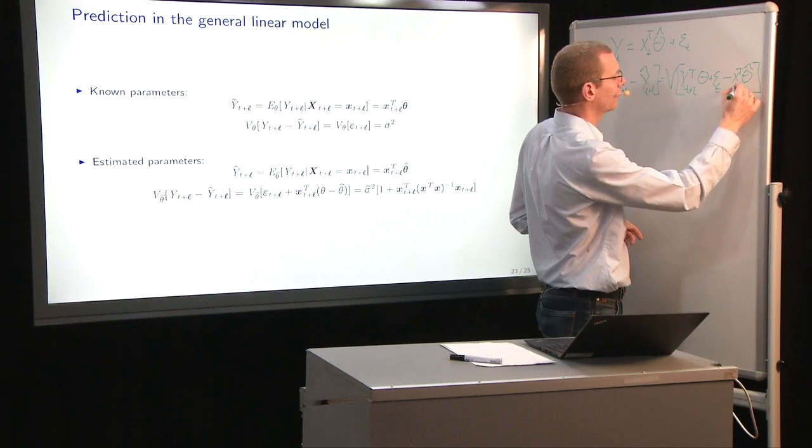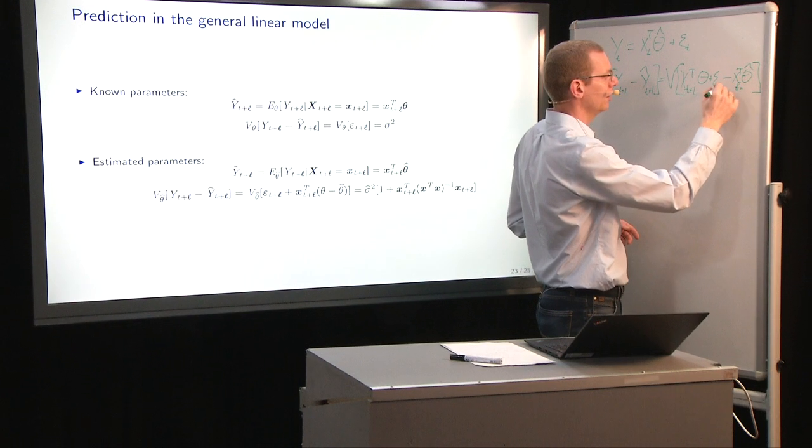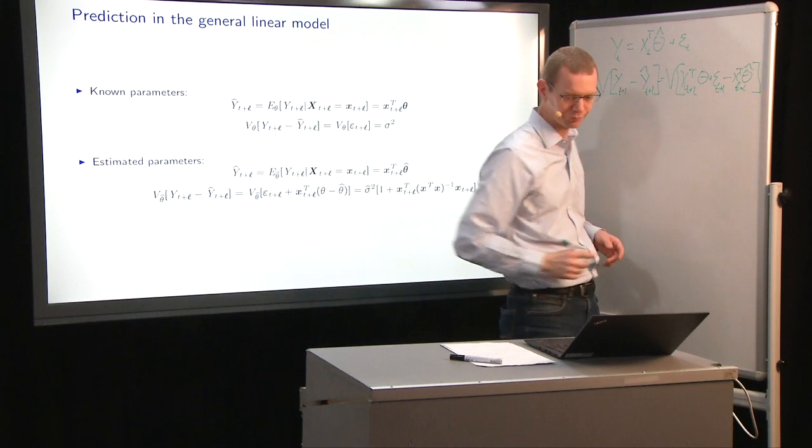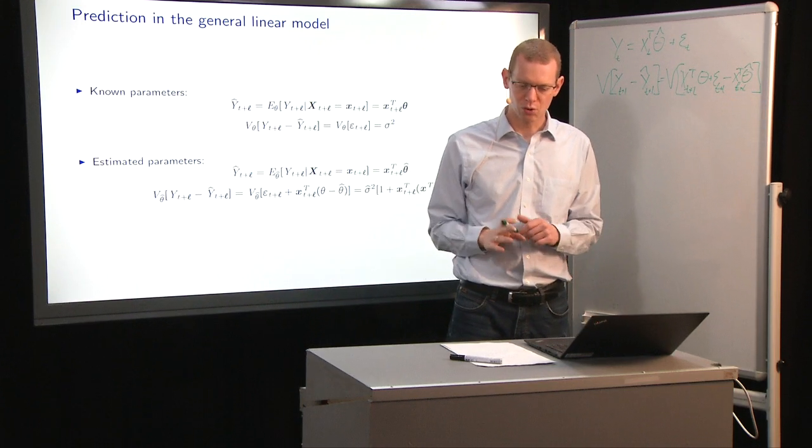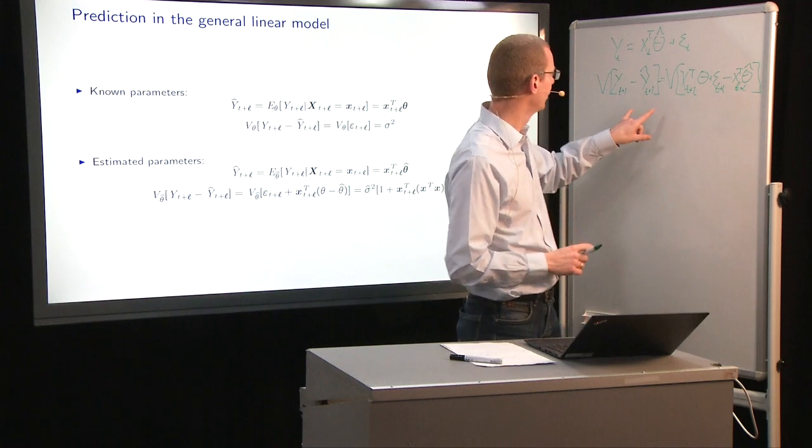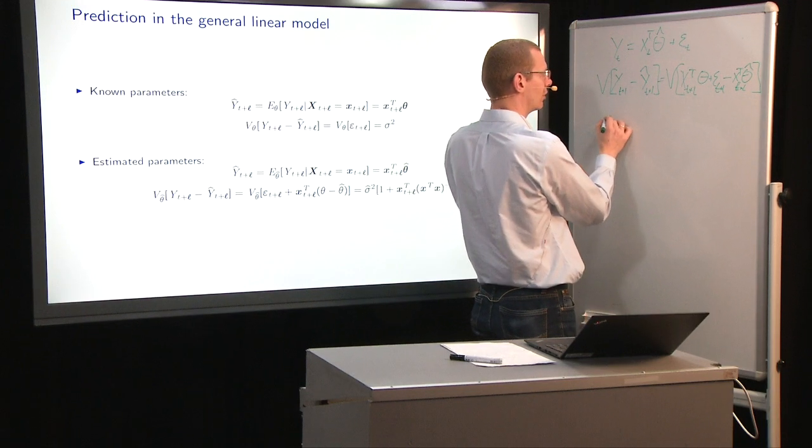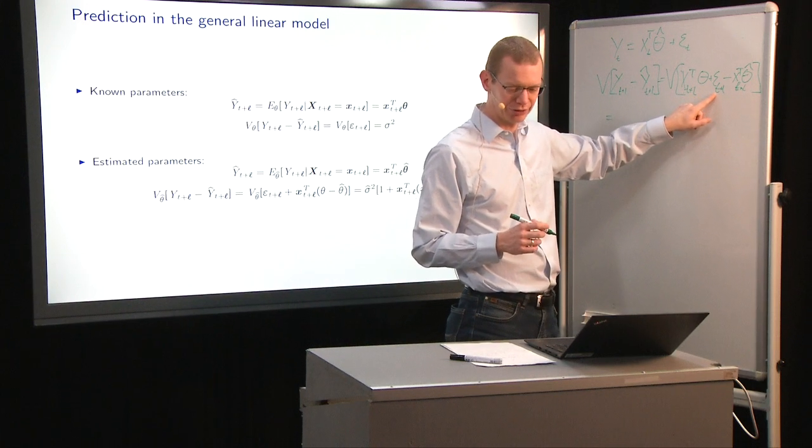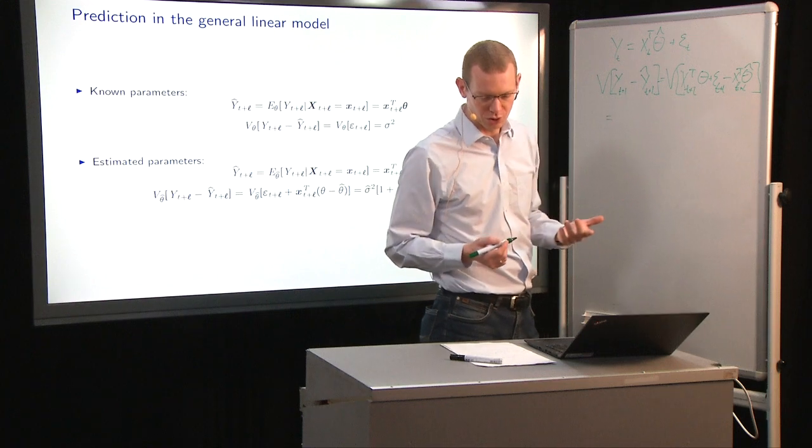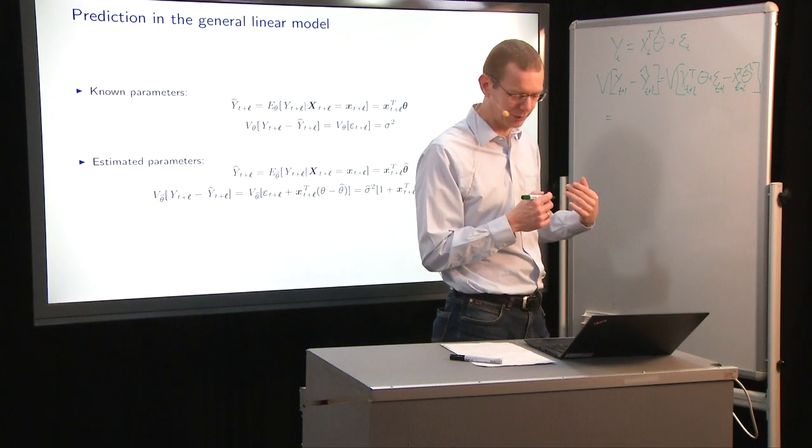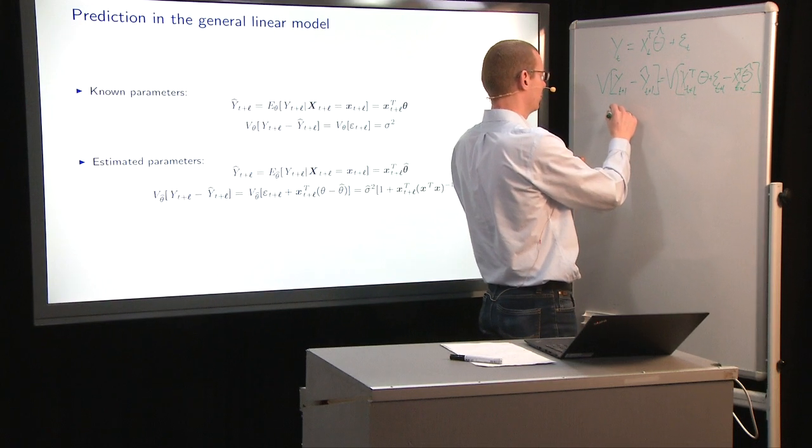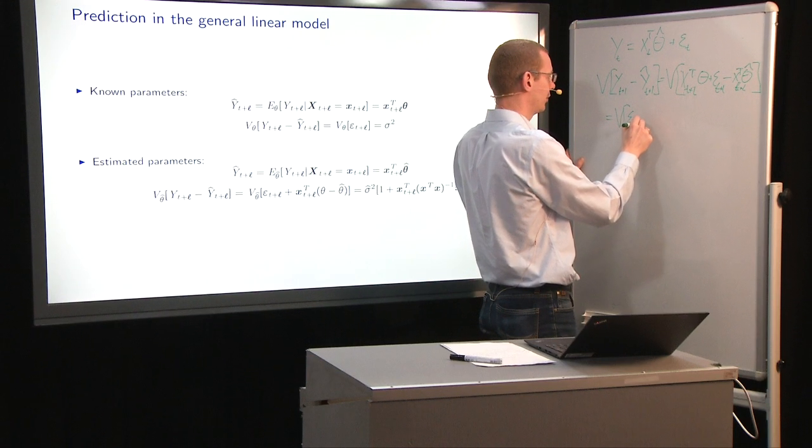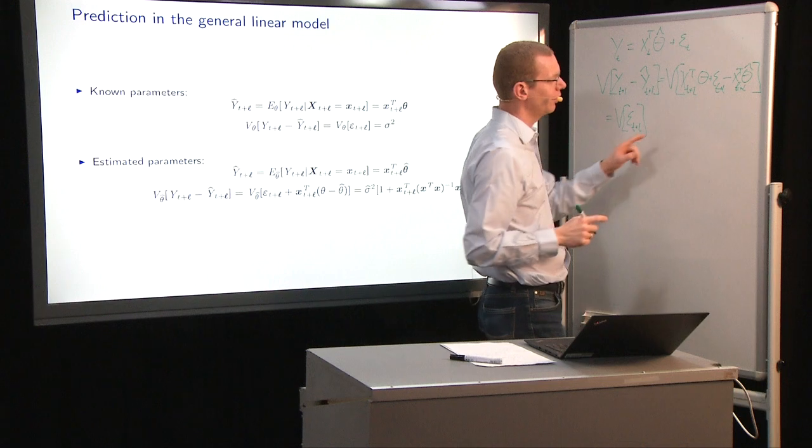And that should be X t plus L, and that's also t plus L. Okay, so what can we do about this? Let's continue looking at this. First of all, the future epsilon here is independent of all the previous epsilons. So we can take that out, say it's a variance of epsilon t plus L.